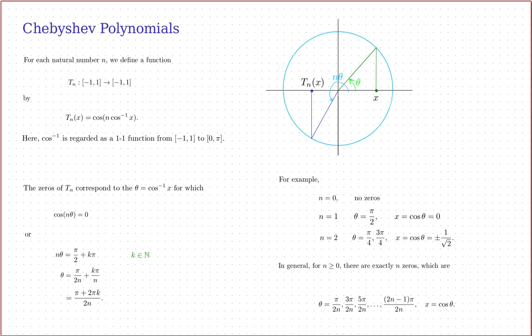Today's video is about the Chebyshev polynomials. The Chebyshev polynomials are functions from the interval from negative one to one to itself — they take x values from negative one to one as inputs and the output is also a value from negative one to one. The definition does not look like a polynomial, but I will convince you that it is in fact a polynomial. The briefest definition is to say that tn of x is equal to cosine of n times inverse cosine of x.